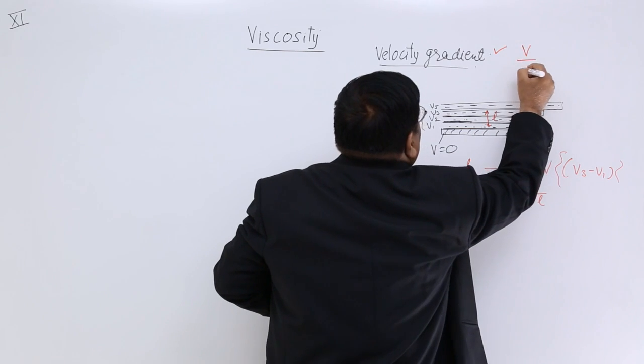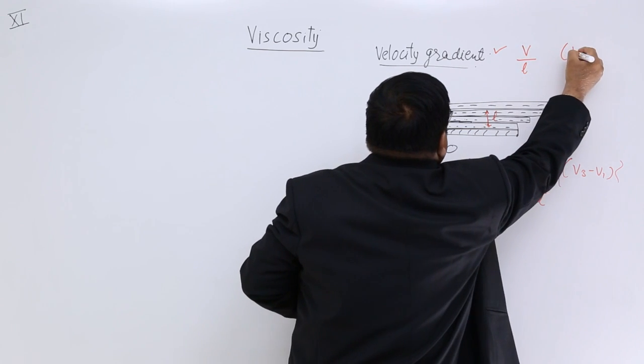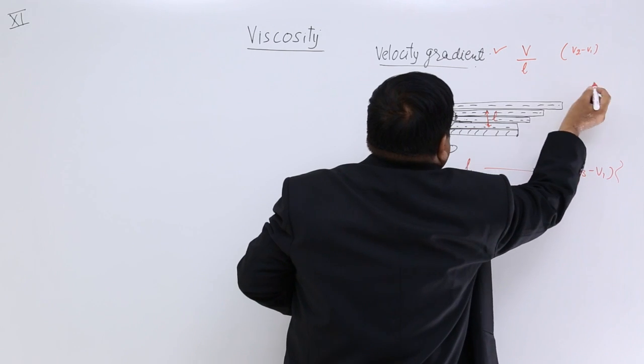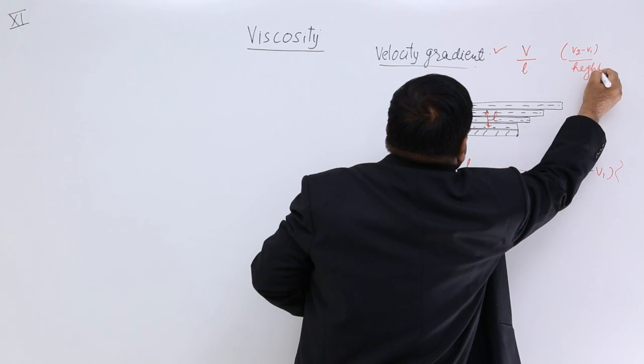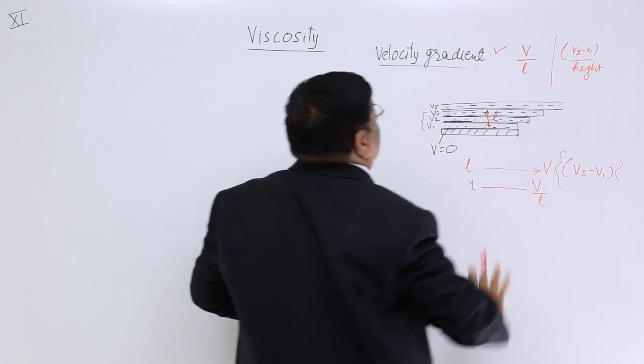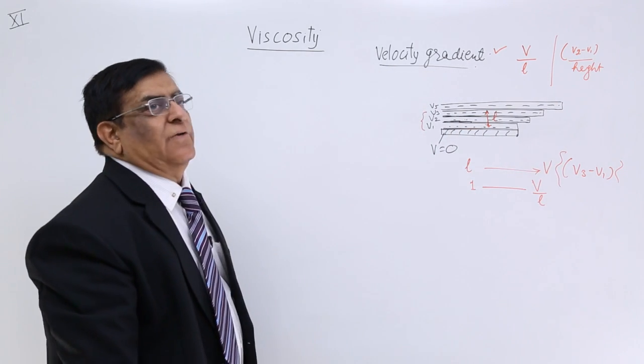V upon L. What is V? Actually, this V is difference of two velocities, and this L is height. Okay? Remember it. So this is our formula of velocity gradient.